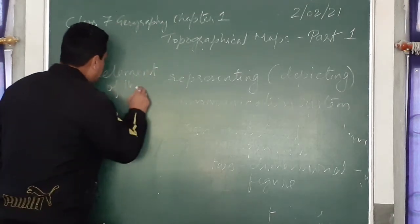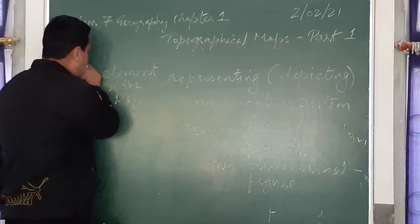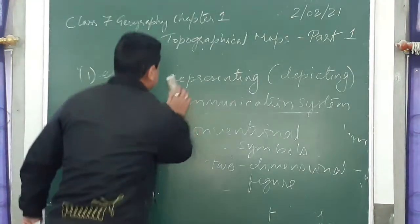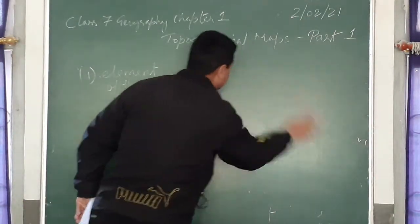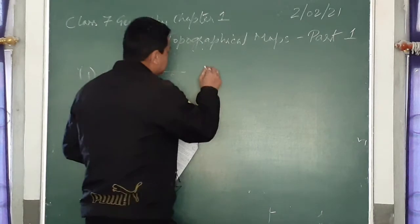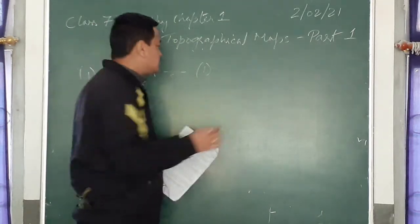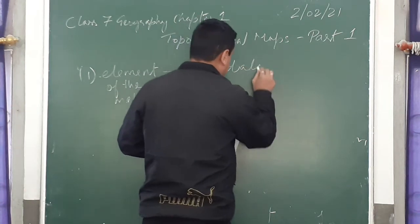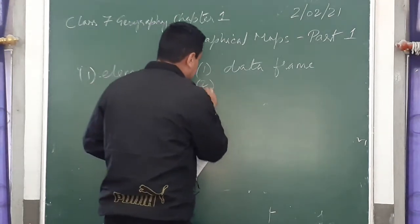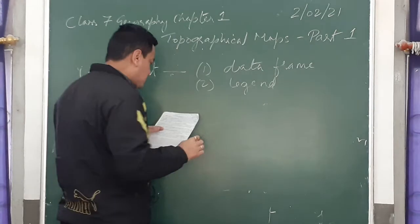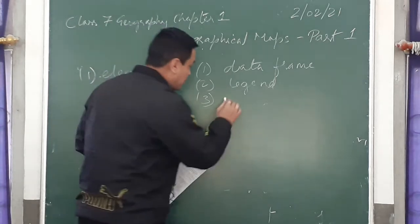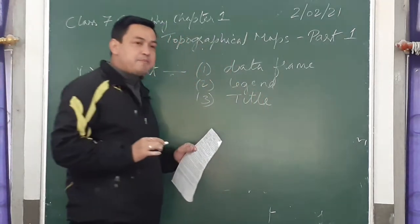What are the elements of the map? There are different elements found in the map. The first one is the data frame. The second one is the legend. These are elements of the map. We studied in class 6 — what is the legend, what is the title? Title of the map: for example, 'It is the political map of Africa' or 'It is the physical map of India.' Every map has a title.